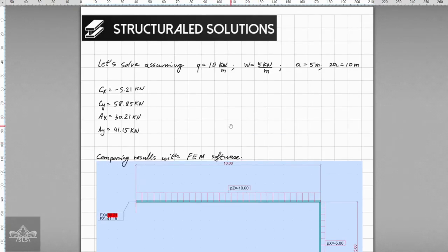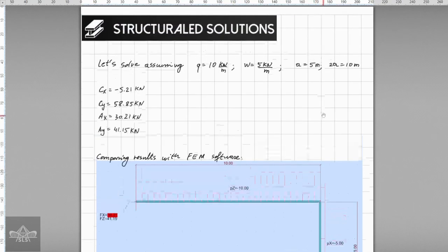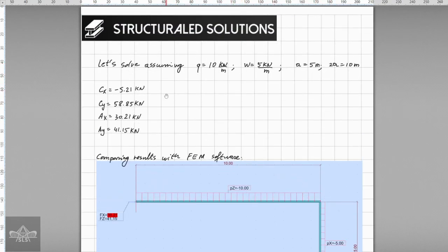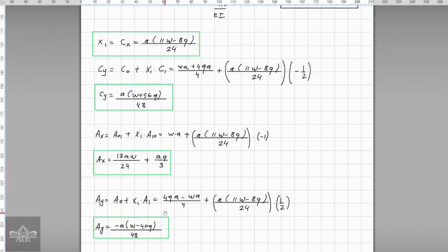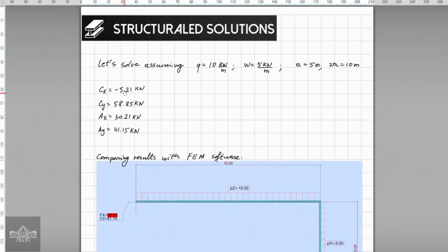Last but not least, if for example we give some value to these loads, for example the vertical load and the wind load - the vertical load given a value 10 kilonewtons per meter and the wind load 5 kilonewtons per meter, and if we give a the value of equal to 5 meters, this means that the 2a is going to be 10 meters. If we substitute these values into the formulas which we already found from here, the results are going to be these ones here.